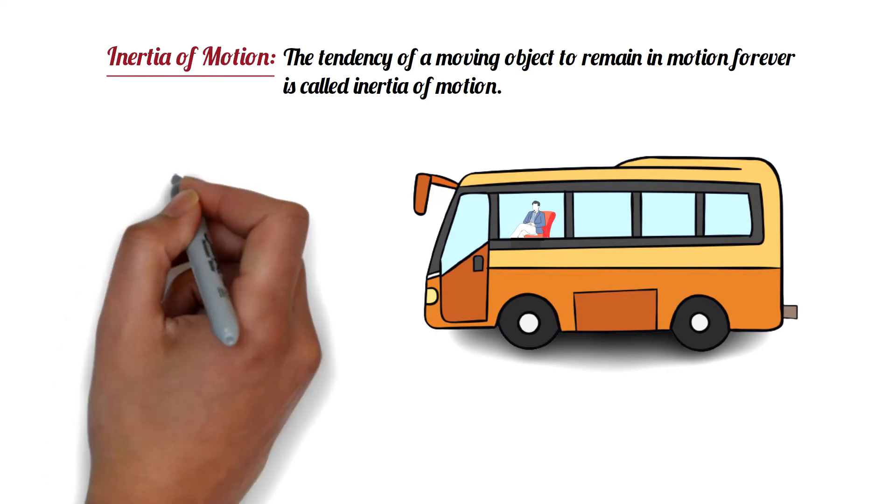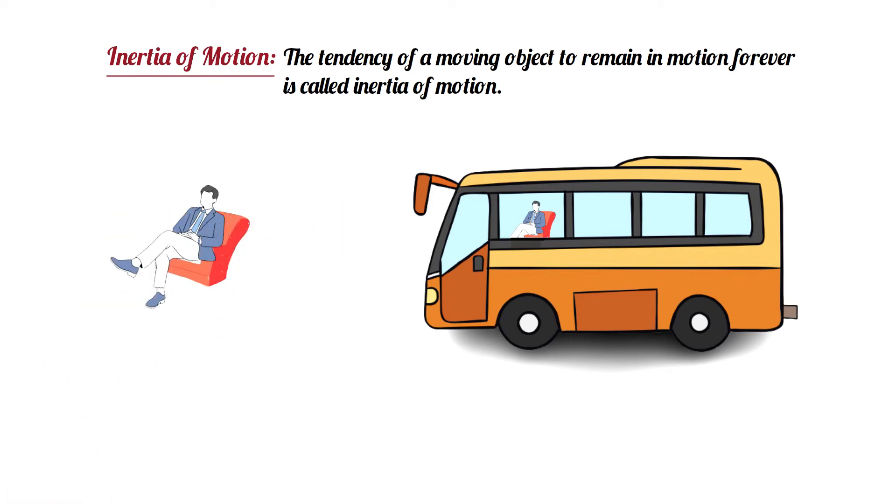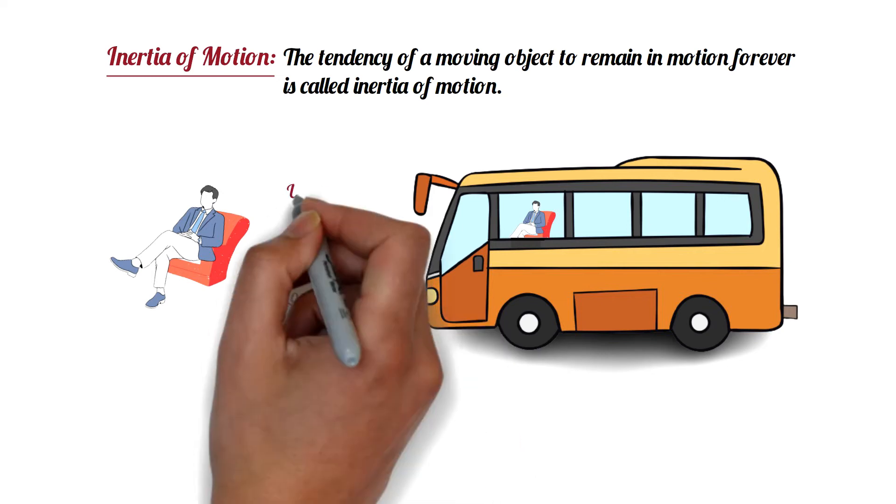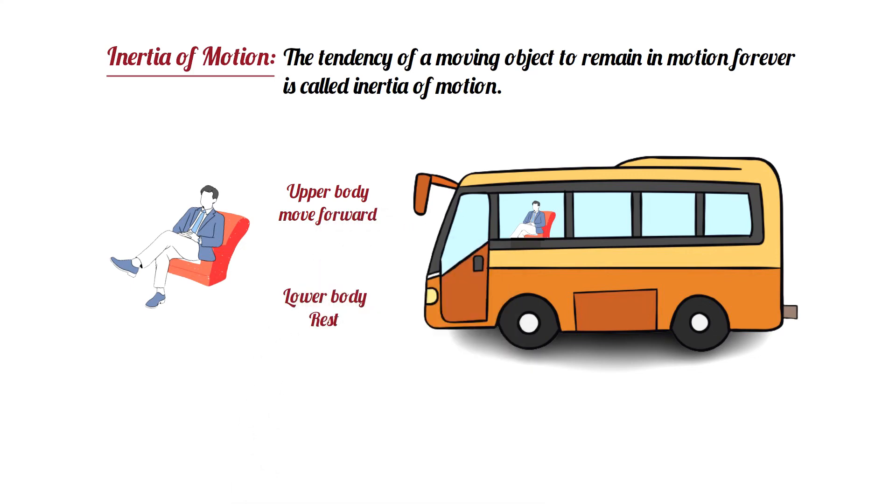When the car is moving, the entire body of the passenger is in motion with the car. As the car stops, the lower body of the passenger comes to rest, but the upper body wants to move forward. As a result, the passenger leans forward.